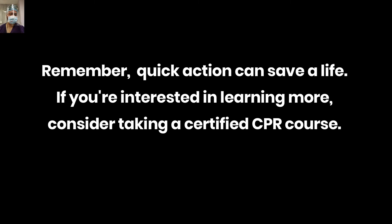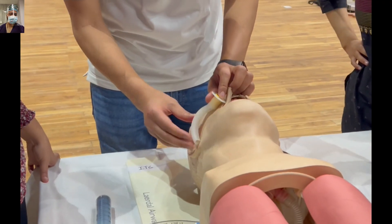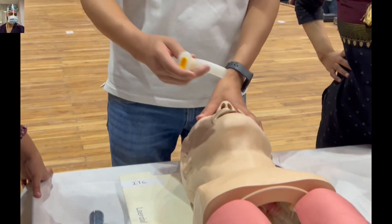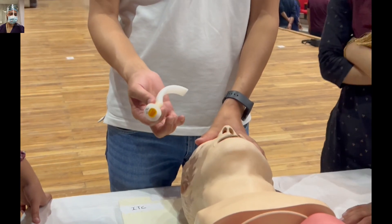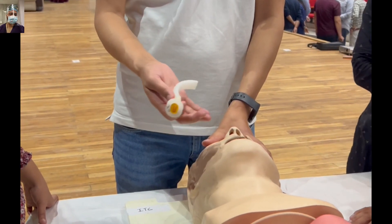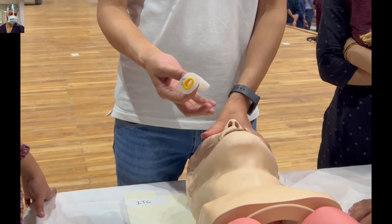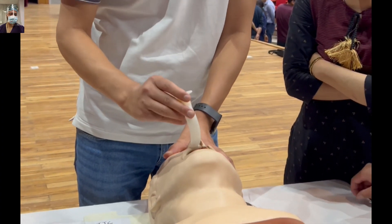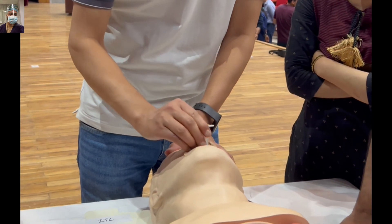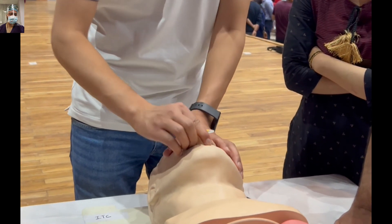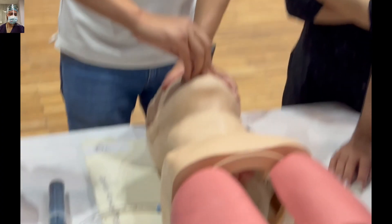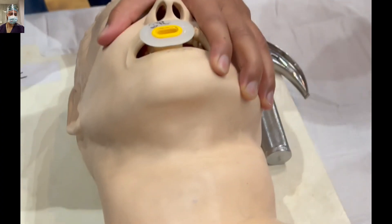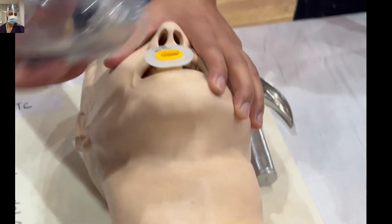Now we will run the whole sequence in a continuous video. First, measure the distance to assess the correct size of the Guedel's Airway — it should reach from the corner of the mouth to the tip of the ear lobule. Then, with the tip of the Guedel's Airway pointing toward you as you stand at the head end, insert it, rotate it 180 degrees, secure it, and start ventilating the patient.